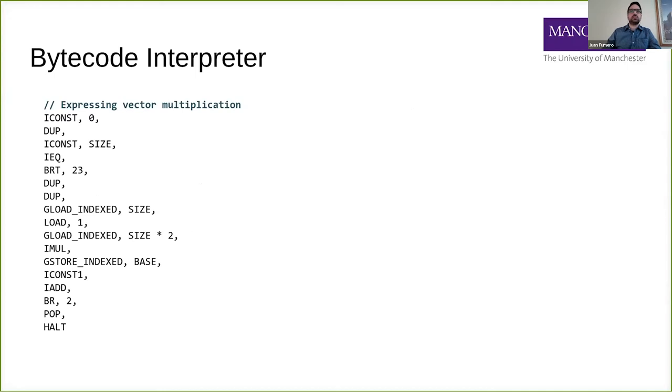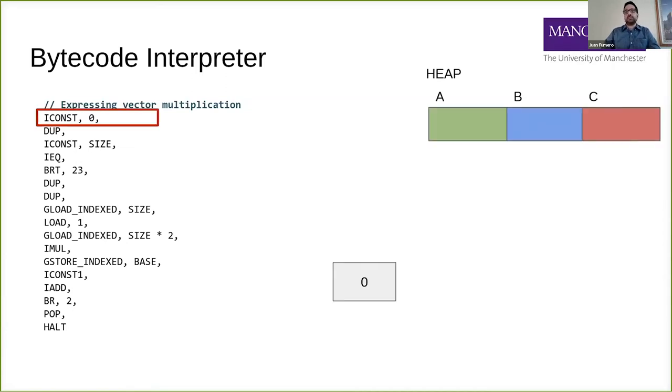Those are the bytecodes we generate. Let me show you with an example. I'll use vector multiplication throughout the presentation. On the left side, you see a list of bytecodes that represent the vector multiplication. On the right-hand side, I show you the heap. So it's a stack machine - the right-hand side is the heap and in the middle I show you the stack. Let me go through quickly how this works.